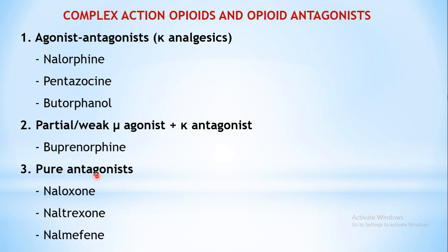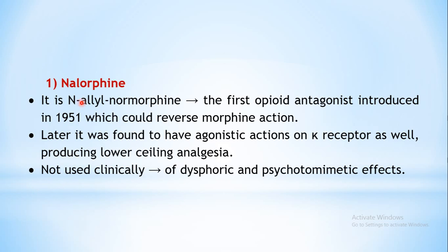The third class is pure antagonist. The drugs naloxone, naltrexone, and nalmefene are the three examples. These act as pure antagonists - they will only block all types of opioid receptors: mu, kappa, and delta. They do not have any agonistic property towards any receptor. This class is used as antidote; specifically naloxone is used as an antidote in opioid poisoning, acting as a specific antidote that can antagonize all the actions of opioid poisoning.